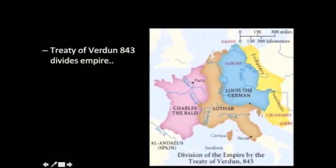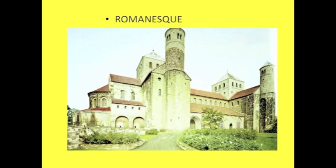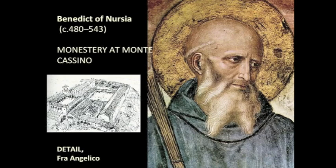When Charlemagne dies, his kingdom is divided into three parts. Louis the German gets what is more or less Germany; Charles the Bald gets what is more or less France; and Lothar gets stuff in the middle. What's important is that the consolidation of all these lands into one unified power was brief but fairly effective. Civil governments become much less important in organizing everyday life than monastic orders, which become stronger and stronger.